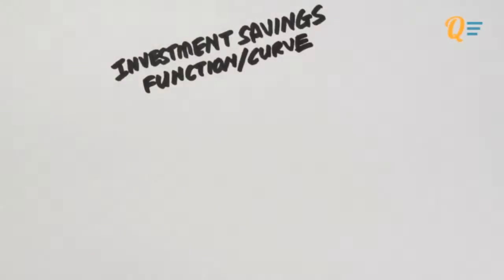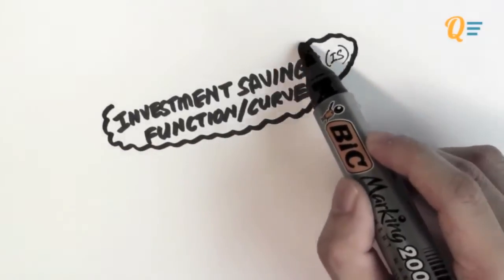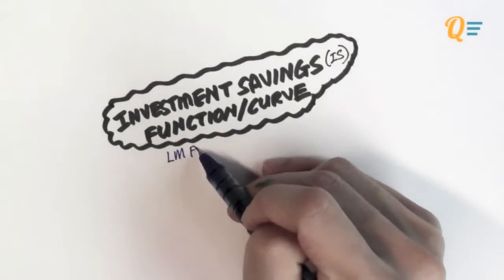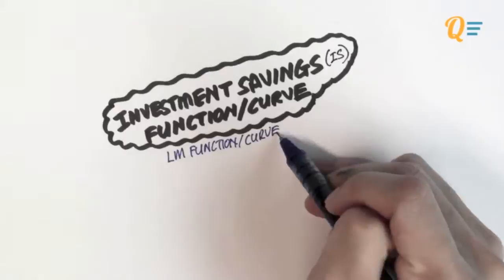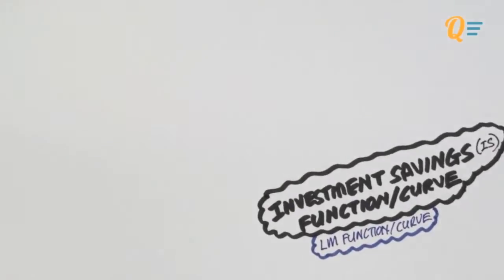Now this is a very important video because you'll be using the IS curve in line with your LM function or LM curve. The IS curve and the LM curve will come together to form what we call the IS-LM model, which is pretty much the core focus on macroeconomics. This is a very important video. I would suggest that you take down as many notes as you can.